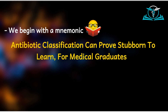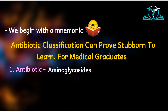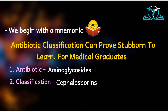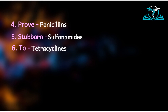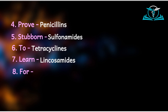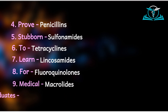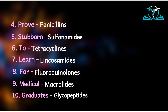So that is the mnemonic. 'Antibiotic' stands for aminoglycosides. 'Classification' for cephalosporins. 'Can' for carbapenems. 'Prove' stands for penicillins. 'Stubborn' for sulfonamides. 'To' for tetracyclines. 'Learn' for lincosamides. 'For' is for fluoroquinolones. 'Medical' for macrolides. And lastly, 'graduates' for glycopeptides. This mnemonic should help us remember the major antibiotic classes.